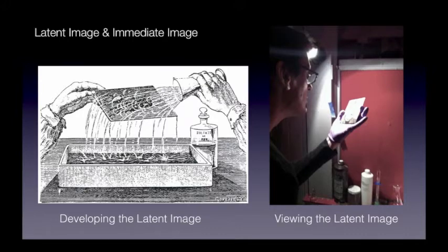For long-time listeners of the podcast, and of course for photographers accustomed to the traditional photographic darkroom, this concept is pretty much a given. When light-sensitive material is exposed to light, a chemical change occurs in the material, but no visible change — some further action is required to make that visible image happen.